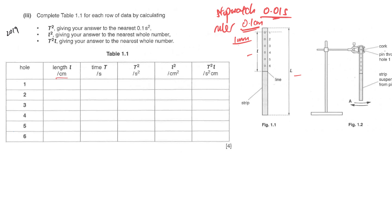Take note of the symbols: capital L is the length of the whole wooden rod, while small l is the distance measured from the line drawn on the rod to the respective holes. The instruction states you measure to the top end of the hole — be consistent for all measurements of small l. For the first column (independent variable, small l), record to 0.1 cm. If the first reading is exactly 24, you still write 24.0.